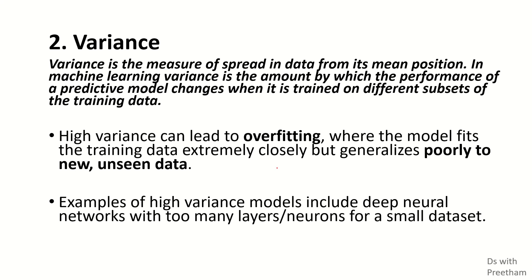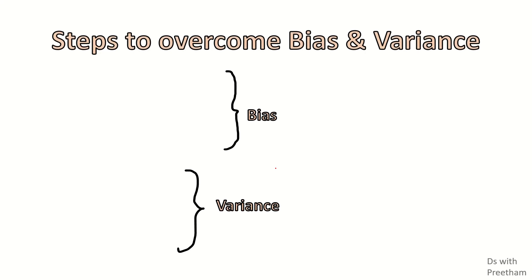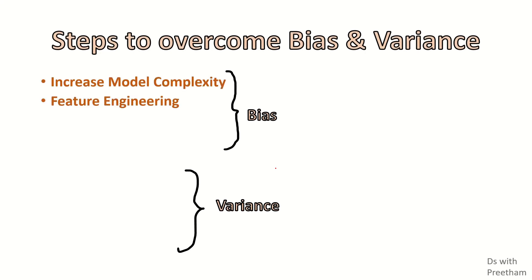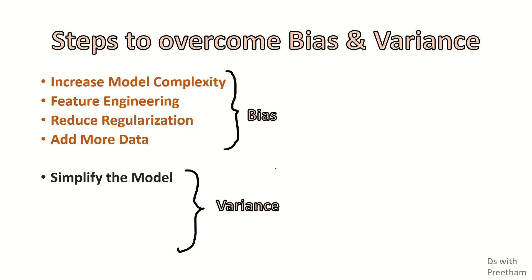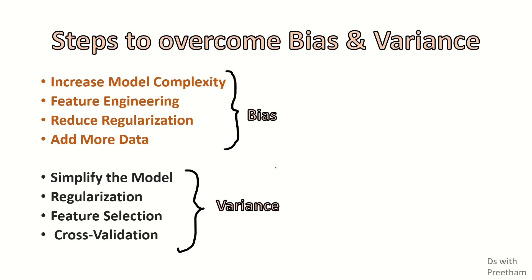Examples of high variance models include deep neural networks, decision trees, and K-nearest neighbors. To address bias: increase model complexity, feature engineering, and add more data. To overcome variance: simplify the model, apply regularization techniques, feature selection, and cross validation.